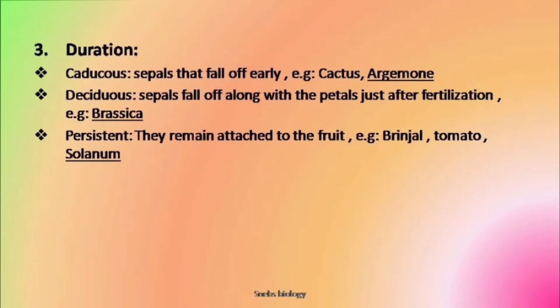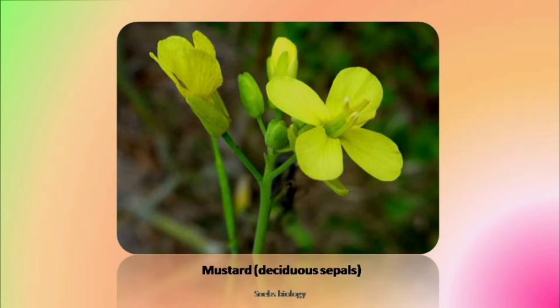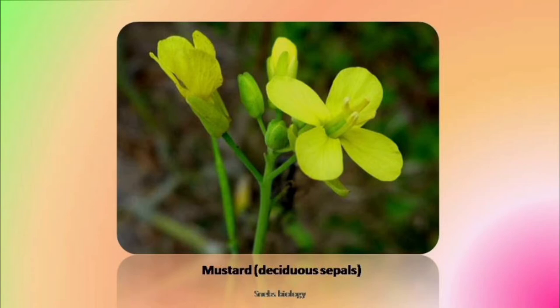The second condition is deciduous, which is the most common one. Every part of the flower has a specific role to play — sepals protect the bud. Once their job is done they should fall off, but if they remain and fall off along with other floral whorls — like petals fall off after pollination is done — then those sepals are known as deciduous. This is very common in most flowers.